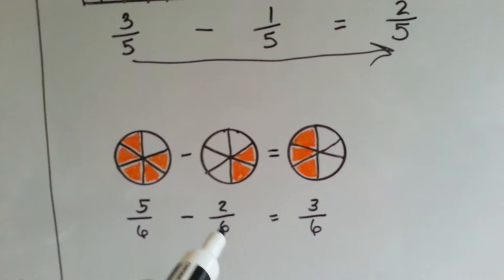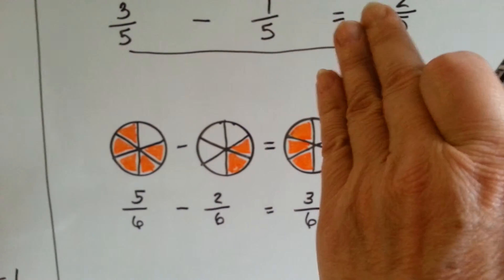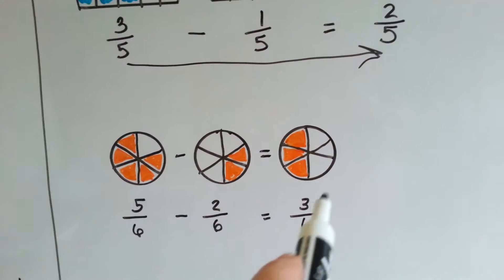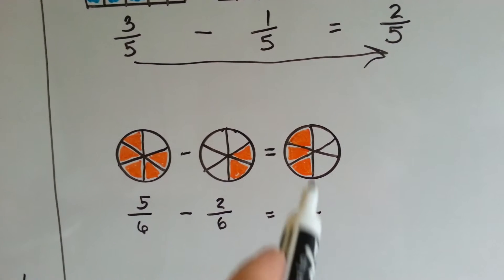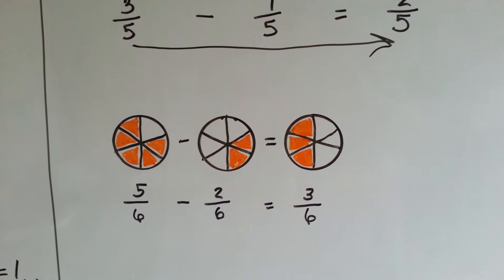So, five sixths, take away two sixths, equals three sixths. Do you notice that three sixths is also a half? Look at that. If you have three parts of something that's split into six things, into six parts, you'd have half of it. That's called an equivalent fraction.